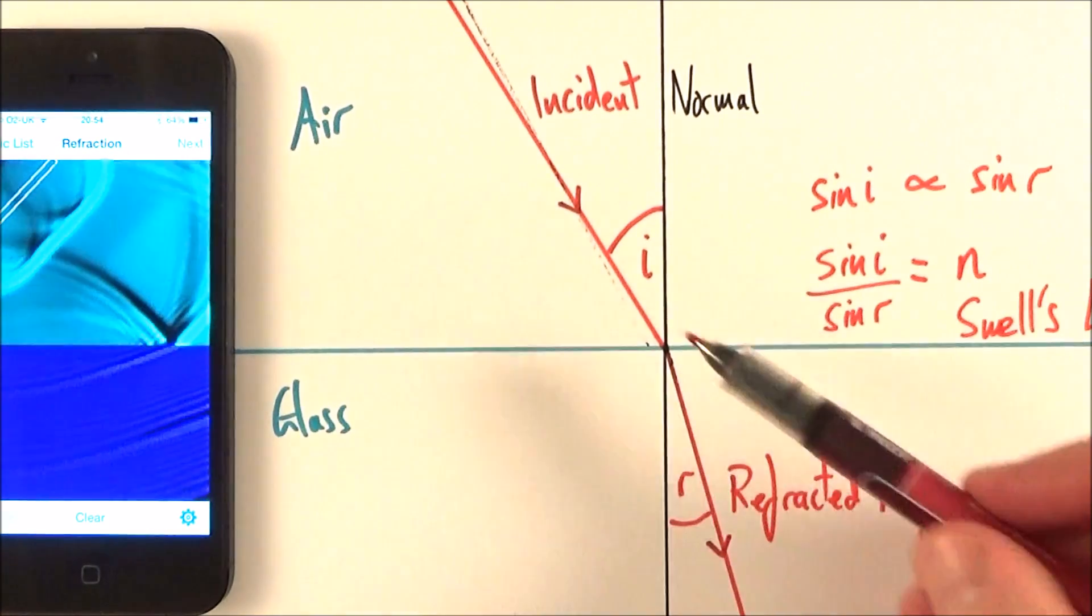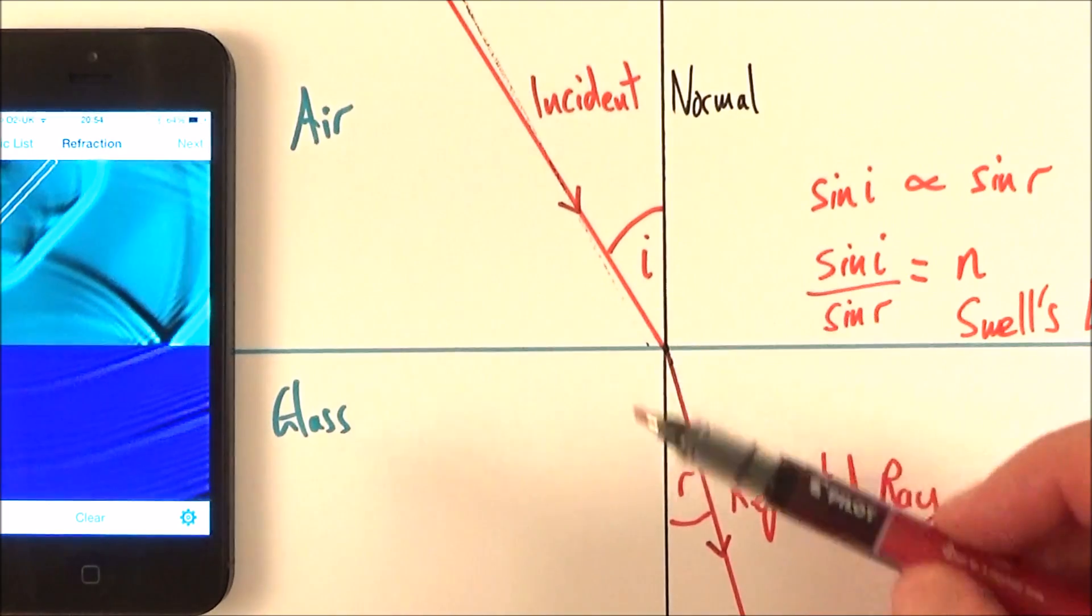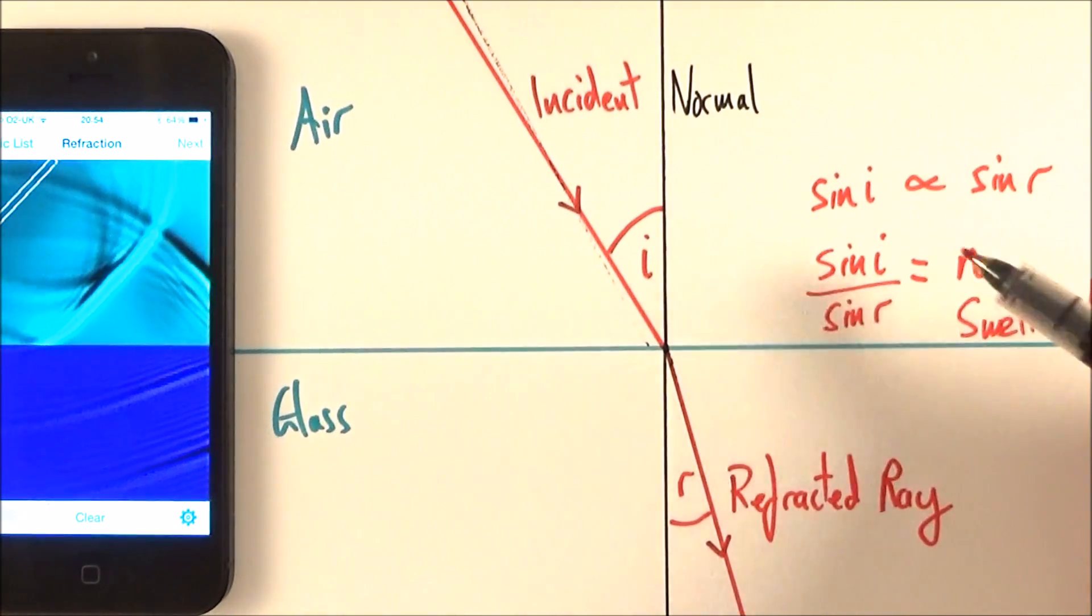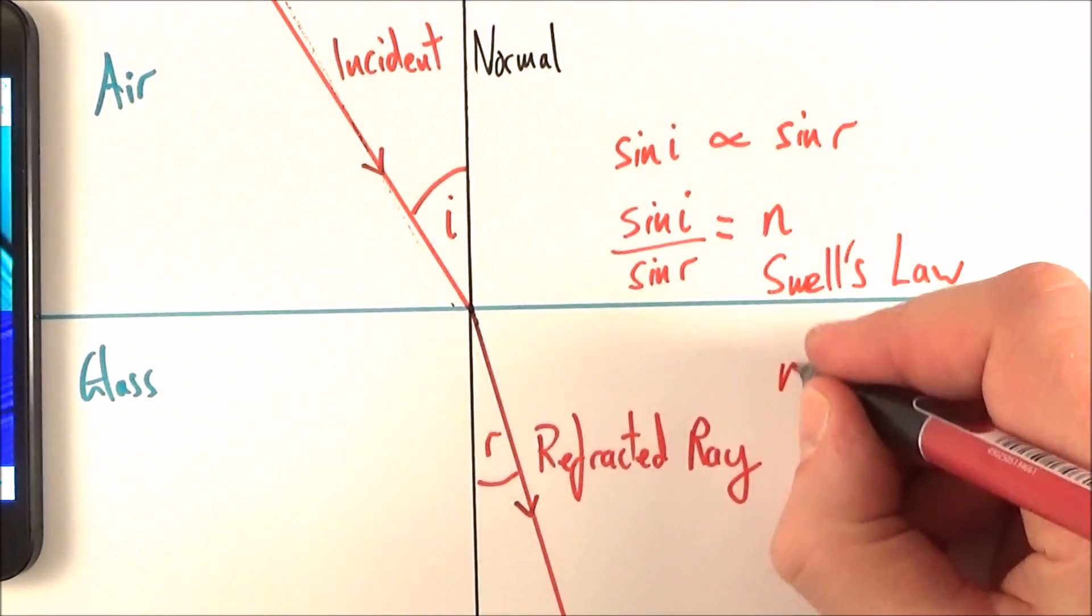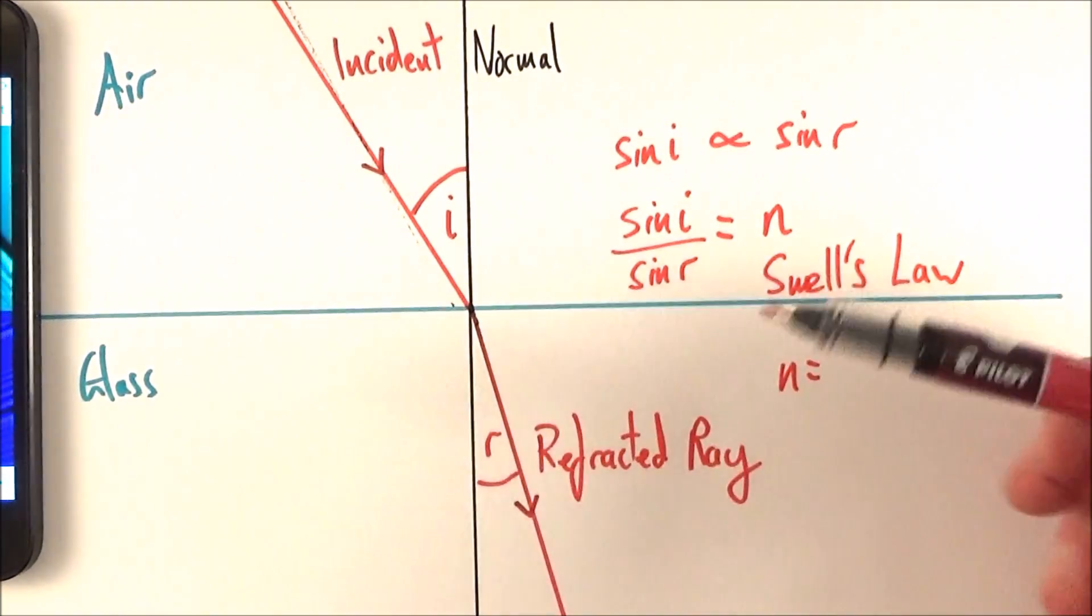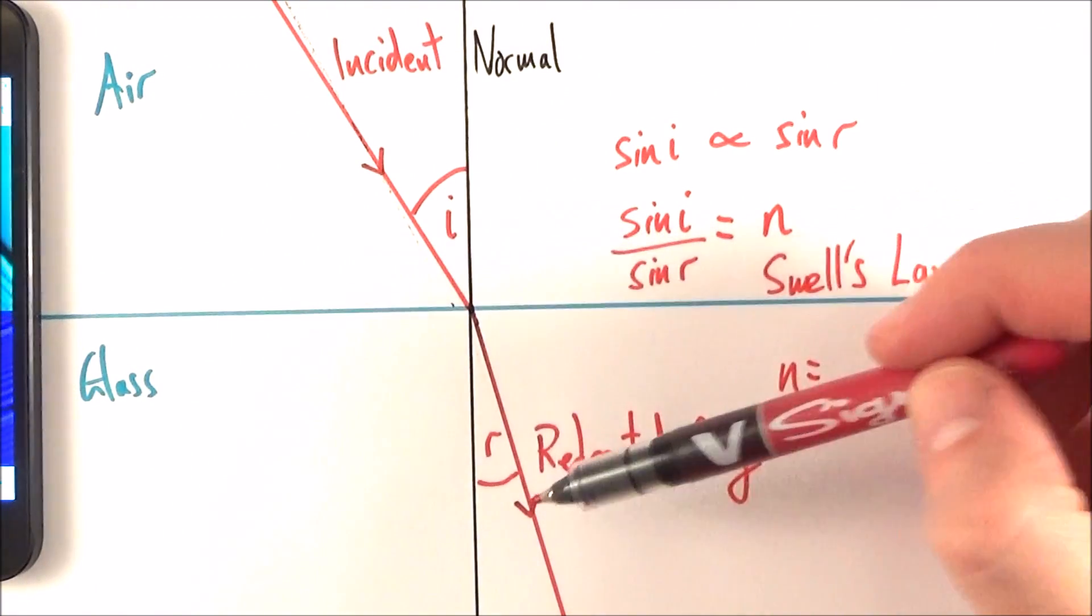And that means if you know the angle of incidence, and you know the angle of refraction, you can work out this constant here. And it also turns out that this value, little n, is equal to the ratio of the speed of the wave in one medium to the other.